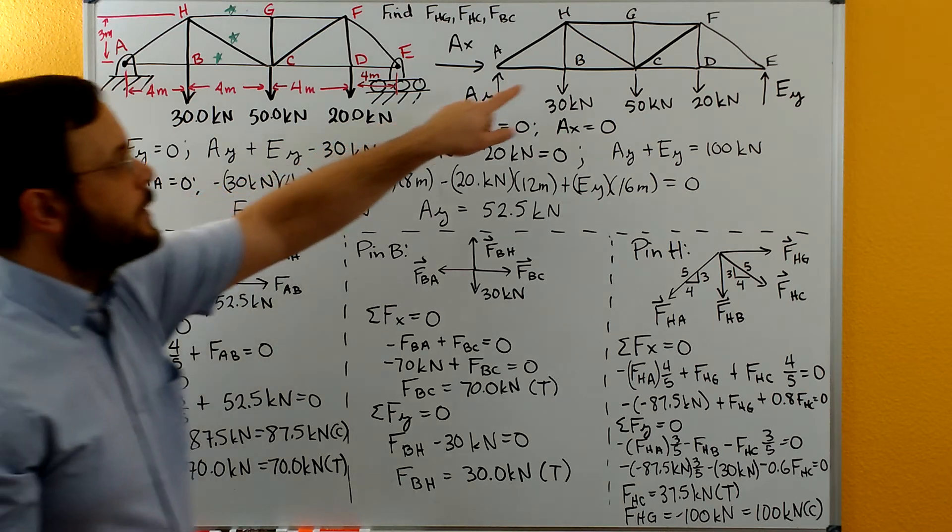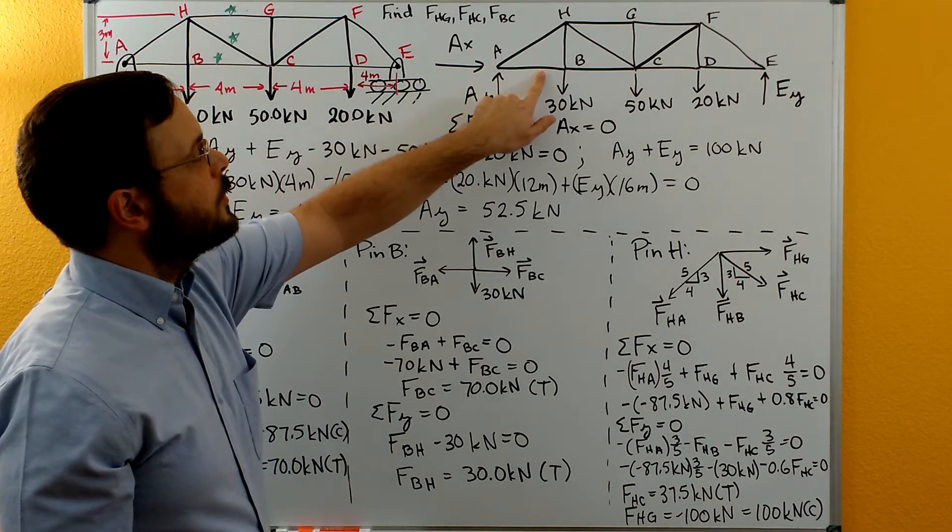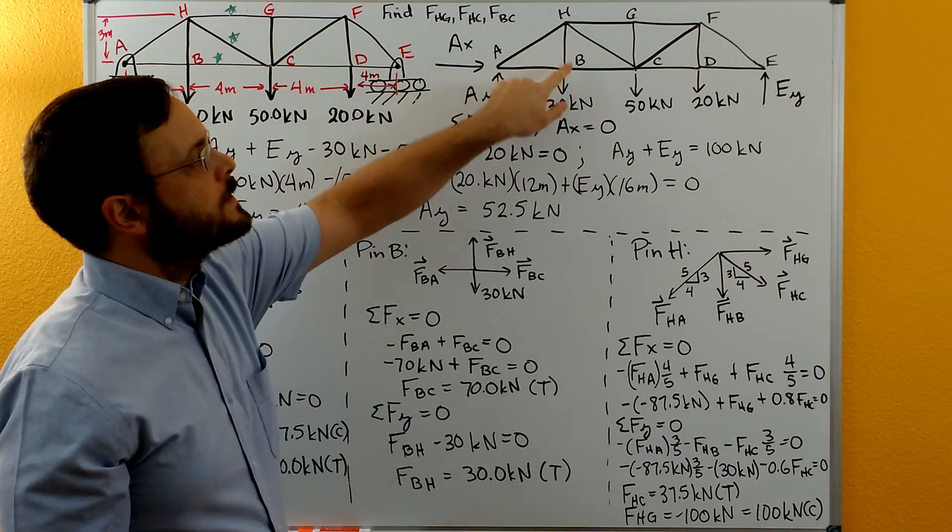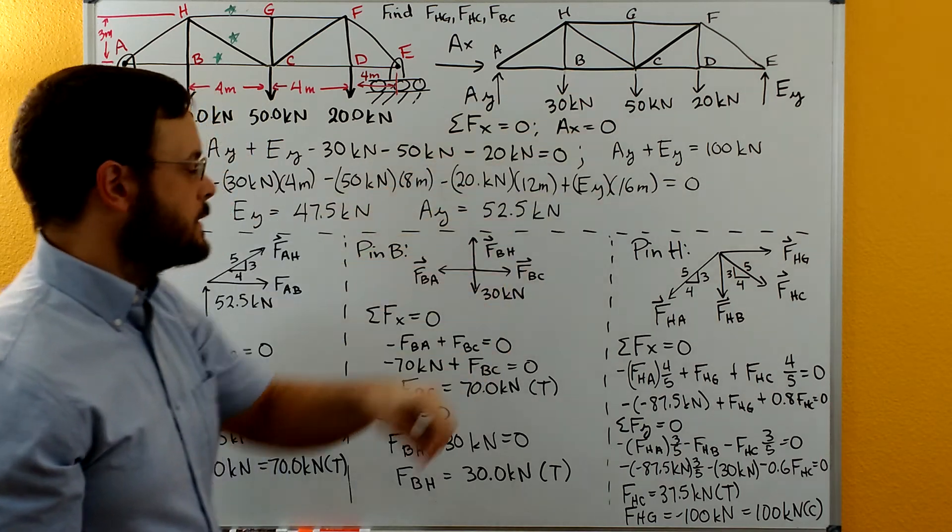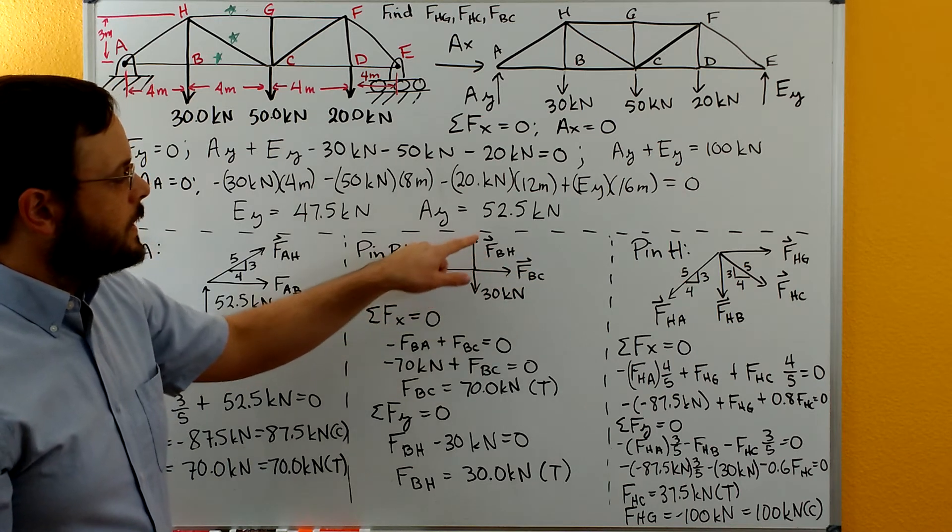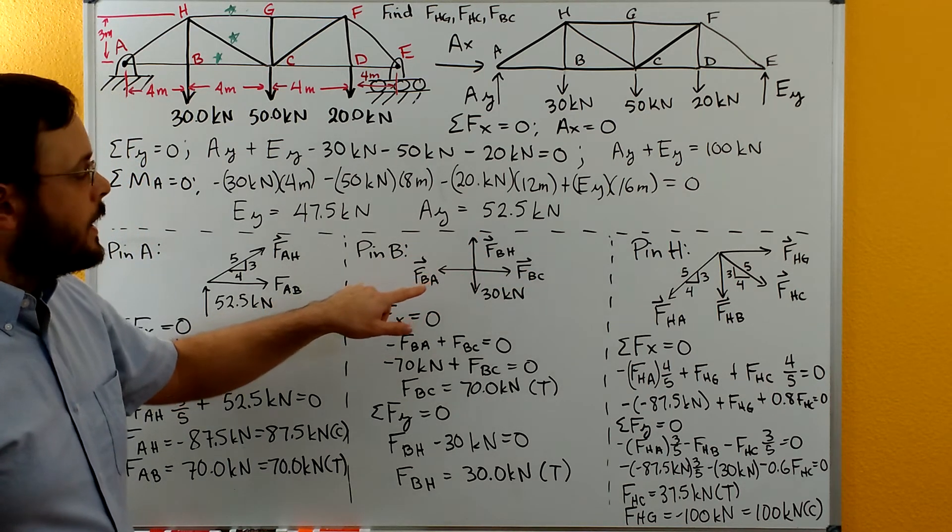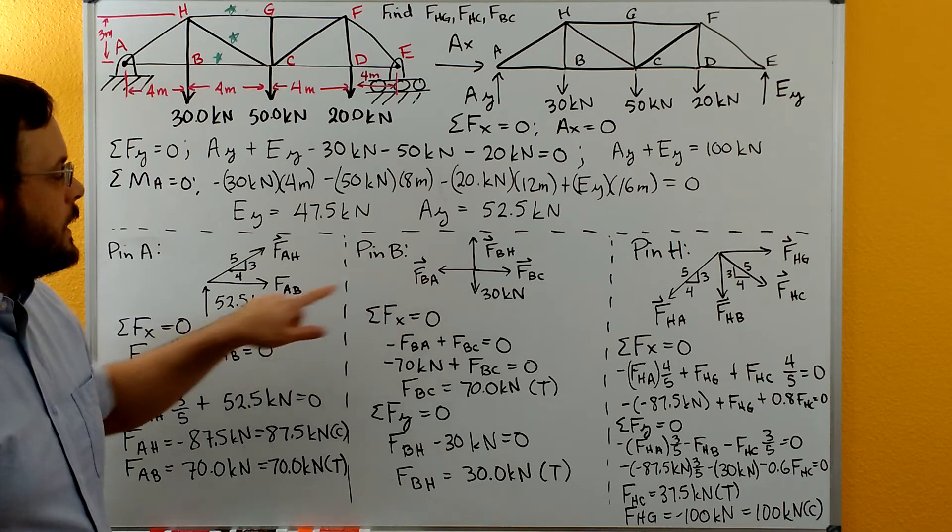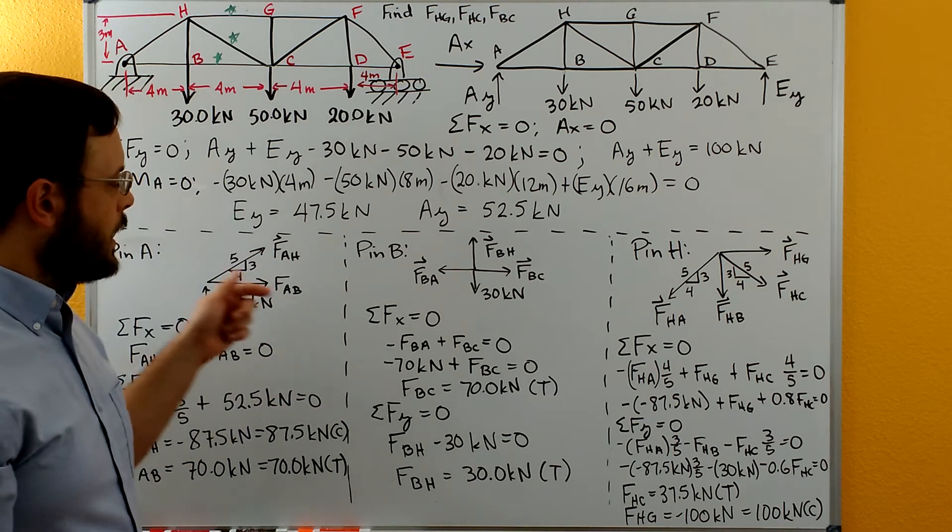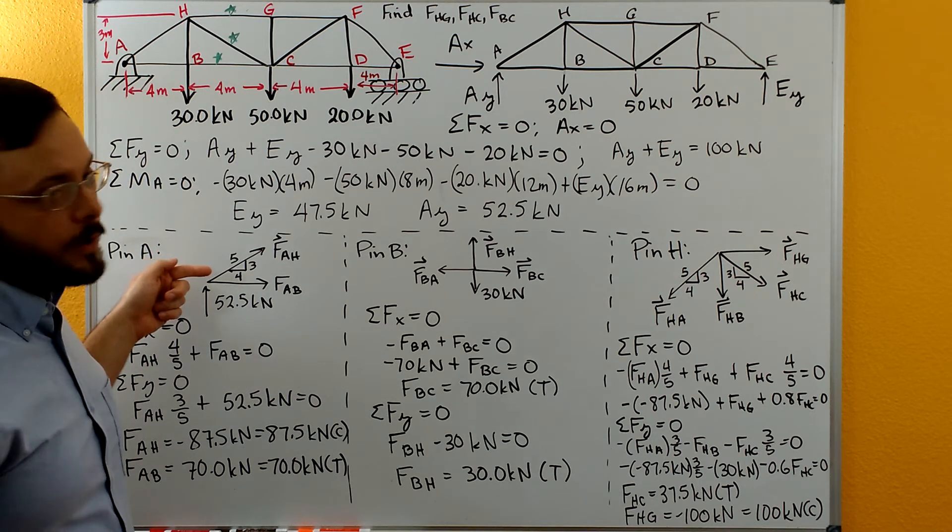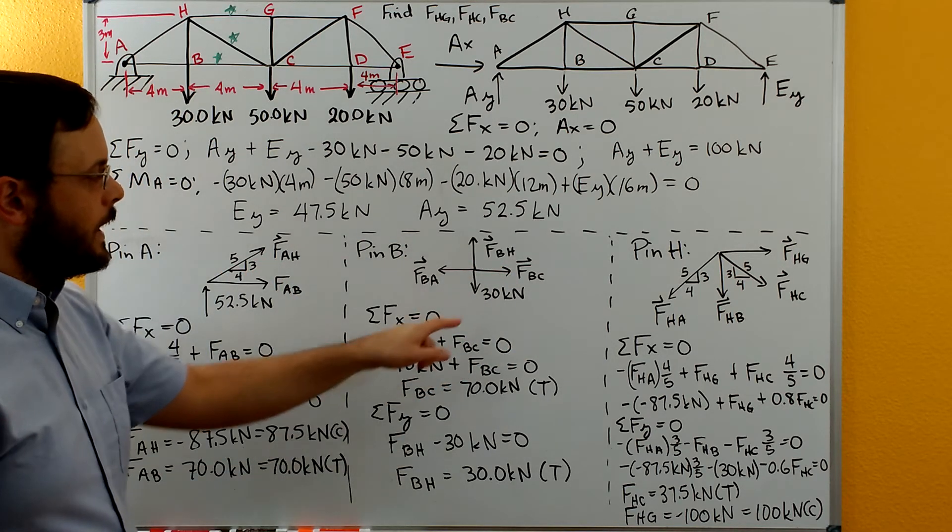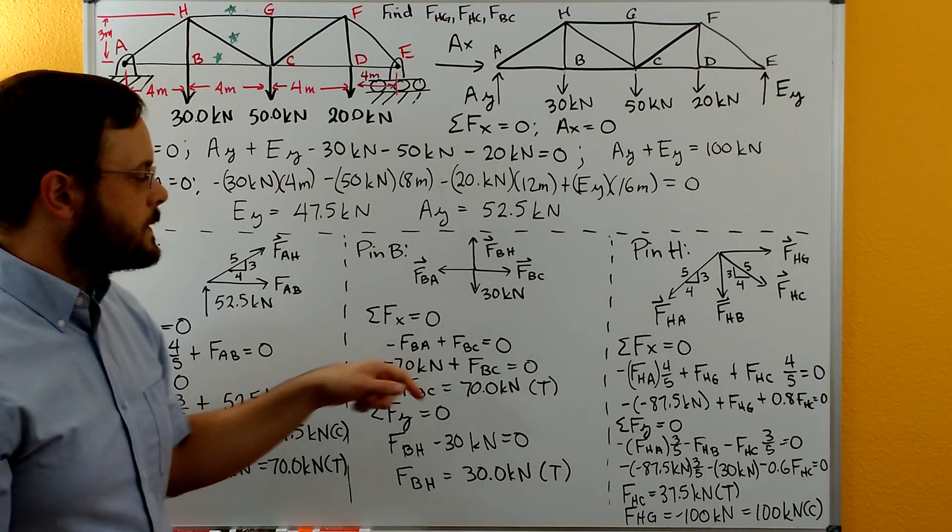Now we can draw pin B here. We solved for AB and AH already, so pin B really only has BH as an unknown and also BC as an unknown. Here's our pin B. We have BC and BH. We also have BA. Note that FBA is the same as FAB. They're just going in different directions because FAB is pulling on pin A in this direction but it's pulling on pin B in this direction. And then we have the 30 kilonewtons that acts at B.